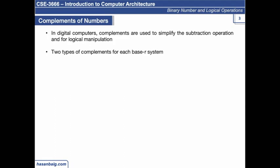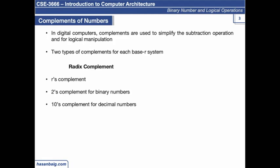In digital computers, complements are used to calculate or perform subtraction as well as representing the sign of a number — it could be negative or positive. Out of two types of complements for each base in our system, the first one is called the radix complement or r's complement. Generally, r refers to the base. For binary, it's called two's complement; for decimal, it's ten's complement; for octal, it's eight's complement. The two most commonly used are two's complement and ten's complement — two's is what computers understand, ten's is for humans.